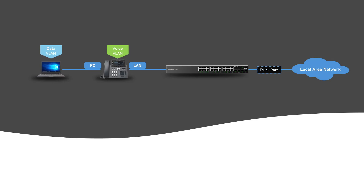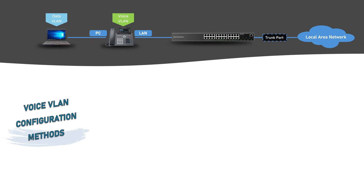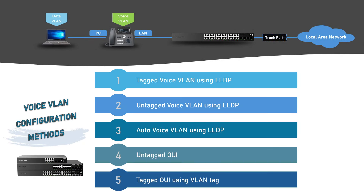However, this method might not be practical for a situation where you have an IP phone and an attached computer both connected to the same switch port. If we set up quality of service to a port used by both an IP phone and a computer, the switch will prioritize both data and voice traffic using the same class priority, which defeats the purpose of prioritizing voice traffic over data traffic. In this chapter, we cover five different methods of voice VLAN configuration to isolate voice traffic from data traffic, which will also allow us to apply quality of service to voice traffic.